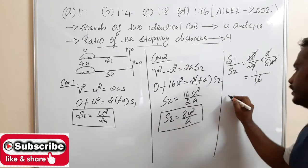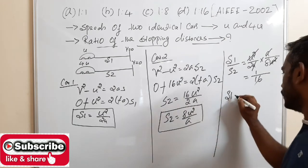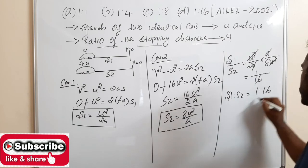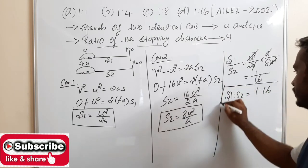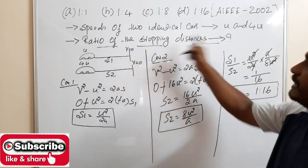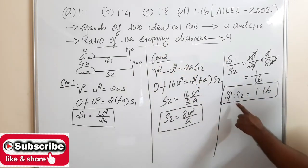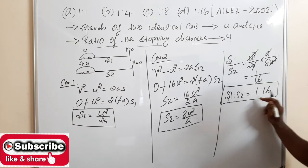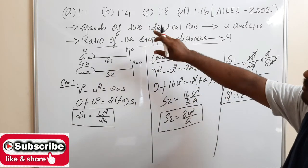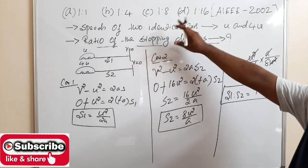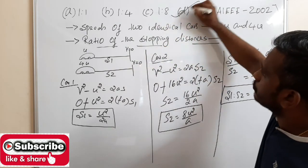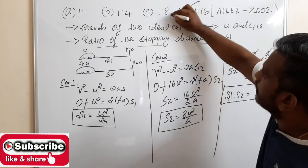Therefore, S1 is to S2 is equal to 1 is to 16. So the ratio of the stopping distances S1 to S2 is 1 is to 16. Looking at the options — A) 1:1, B) 1:4, C) 1:8, D) 1:16 — option D is the correct answer.